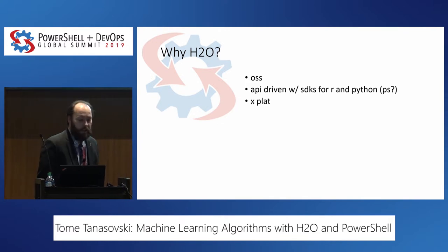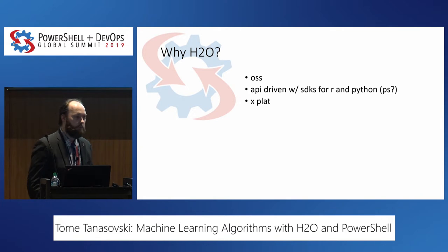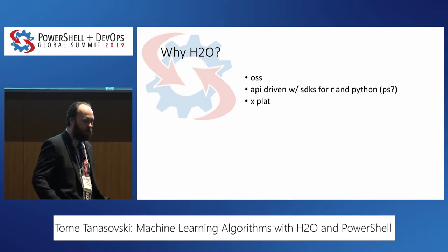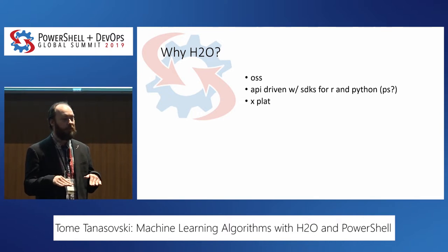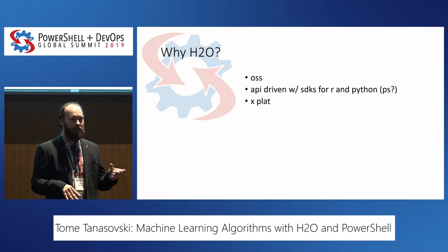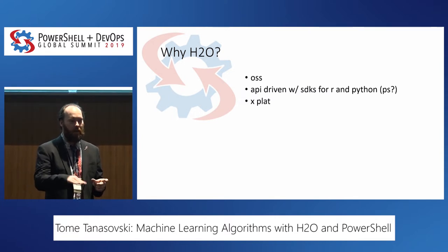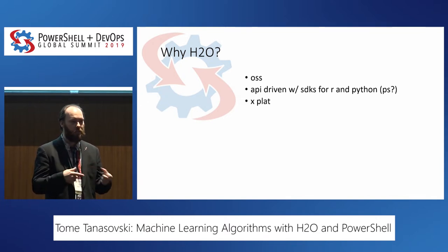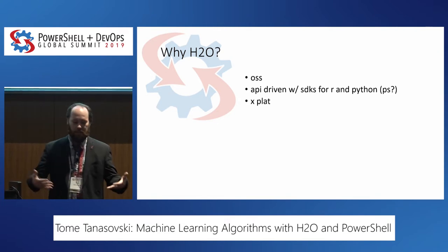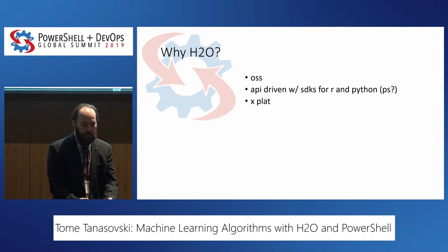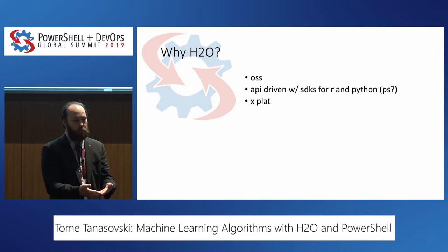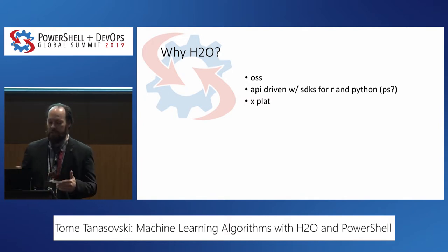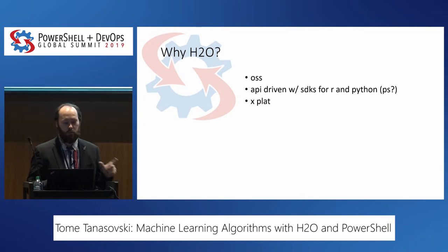Because it's API driven, that makes it cross-platform. Not just cross-platform, but multiple languages can use the H2O framework at the same time. A Java application could set up a data model and then PowerShell could connect to that instance and leverage it. H2O is a Java application that spins up as a server — it maintains state while it's living, and when it goes away, you lose that state unless you serialized it out.